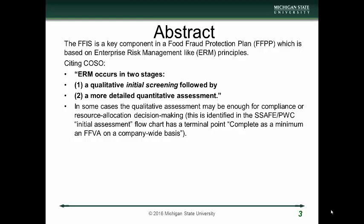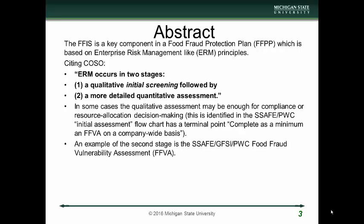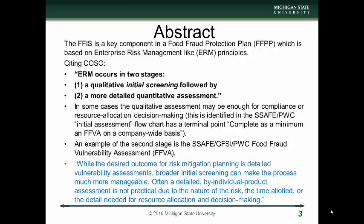This has been defined as one of the key points in the initial assessment area covered by the S-SAFE vulnerability assessment, implemented by PwC. The S-SAFE activities have been endorsed by the Global Food Safety Initiative. The terminal point on their flow chart is to complete at a minimum a FFVA on a company-wide basis. So this initial screening at the very most basic level is that type of company-wide basis. The second stage is the more detailed food fraud vulnerability assessment. While the desired outcome for risk mitigation planning is detailed vulnerability assessments, broader initial screening can make the process much more manageable.